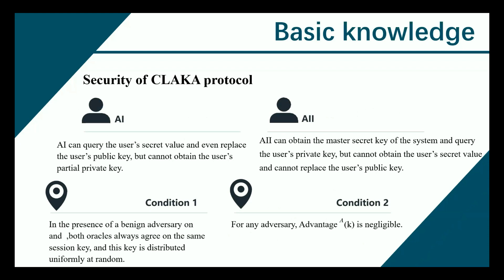There are two types of adversaries against a CLAKA protocol. The Type 1 adversary A1 can query the user's secret value and even replace the user's public key, but cannot obtain the user's partial private key. The Type 2 adversary can obtain the master secret key of the system and query the user's private key, but cannot obtain the user's secret value and cannot replace the user's public key. The abilities of both adversaries are simulated through queries with the challenger C.